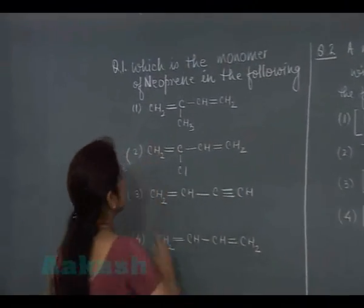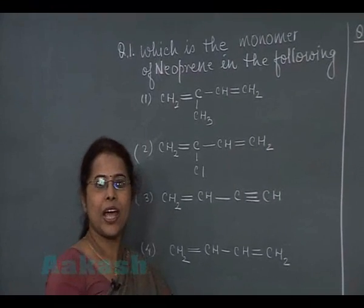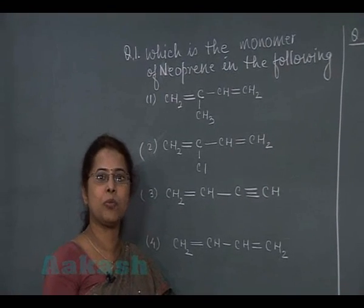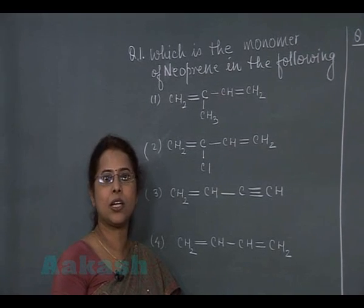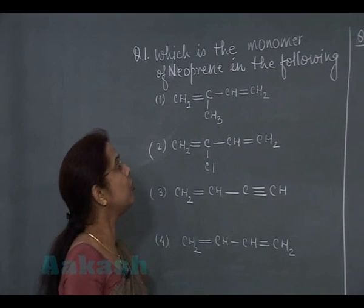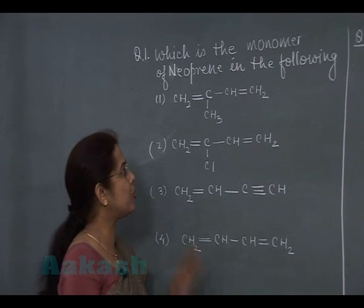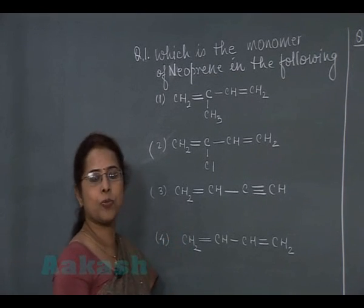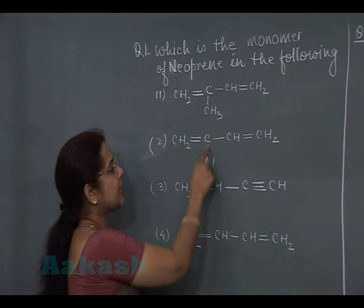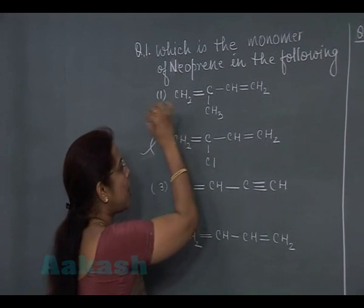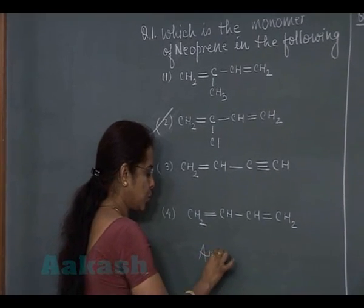The first question asks which is the monomer of neoprene. As we know, neoprene is a polymer used for the preparation of synthetic rubber. The monomer used for neoprene is chloroprene. Looking at the options, the second option contains chlorine, so that compound is chloroprene. The answer is option 2.